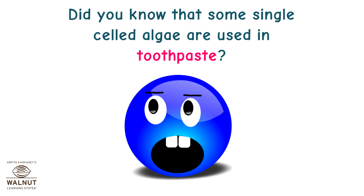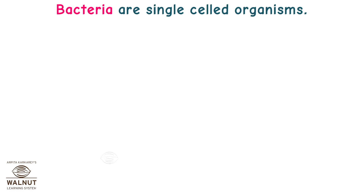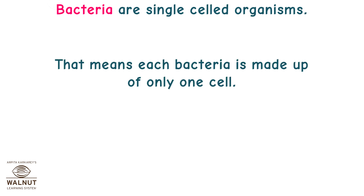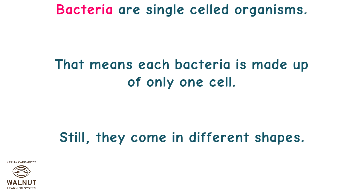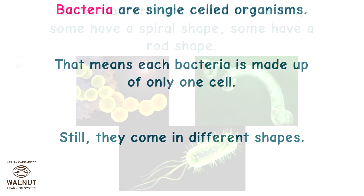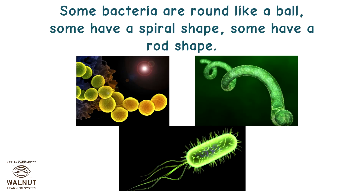Did you know that some single-celled algae are used in toothpaste? Bacteria are single-celled organisms — each bacterium is made up of only one cell. Still, they come in different shapes. Some bacteria are round like a ball, some have a spiral shape, and some have a rod shape.